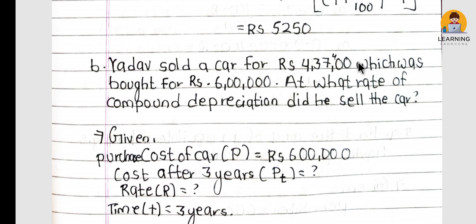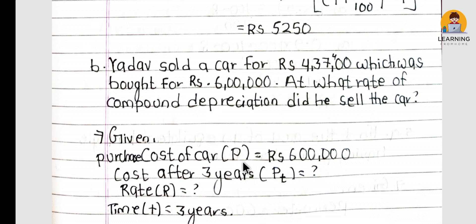Question 4(b): Yadav sold a car for Rs 4,37,400 which was bought for Rs 6,00,000. At what rate of compound depreciation did he sell the car? Note: there is a mistake in this question — the English version doesn't mention the time period, but the Nepali version says 3 years.